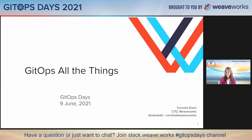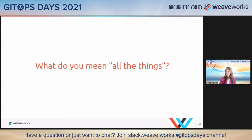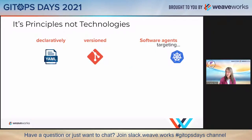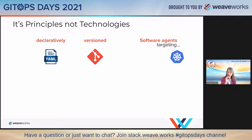We are going to talk about GitOps and all the things. I pulled a slide from last year where we talked about the principles of GitOps — we use YAML, Git, and Kubernetes as icons for key elements: declarative configuration, version controlled, and software agents that do both delivery and runtime operations. While we use those icons, there's actually a lot more flexibility and openness.